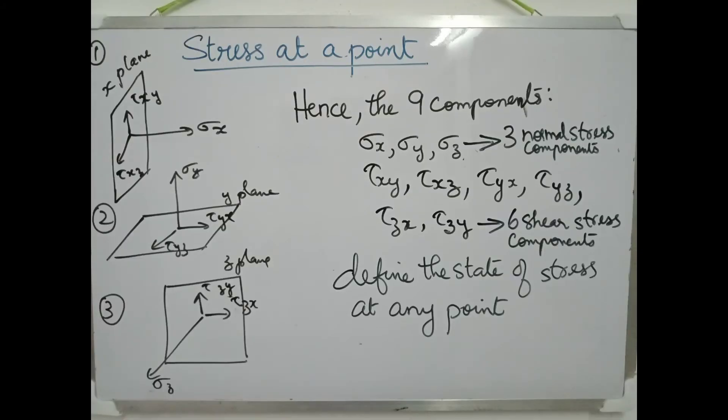Hence, the nine components that is three normal stress components sigma x, sigma y and sigma z and the six shear stress components that is tau xy, tau xz, tau yx, tau yz, tau zx, tau zy. All these stress components together will define the state of stress at any point.